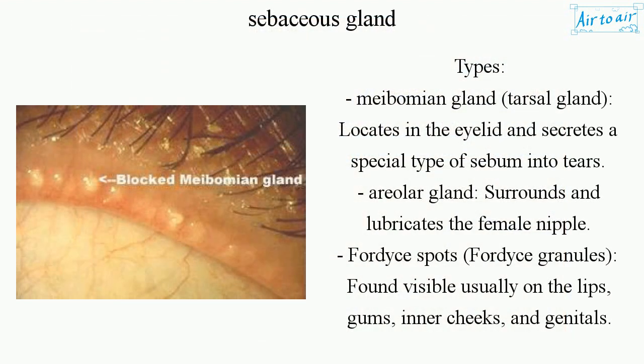Types: Meibomian gland, also called the tarsal gland, locates in the eyelid and secretes a special type of sebum into tears. Areola gland surrounds and lubricates the female nipple.